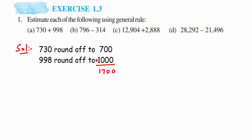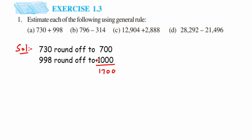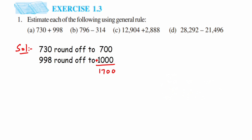Next question: we have 796 and 314. When you round off 796 — it lies between 700 and 800, with 750 at the center — 796 is closer to 800, so it becomes 800. Similarly, 314 lies between 300 and 400. Since 314 is less than 350 (the center), it is closer to 300, so it rounds off to 300.